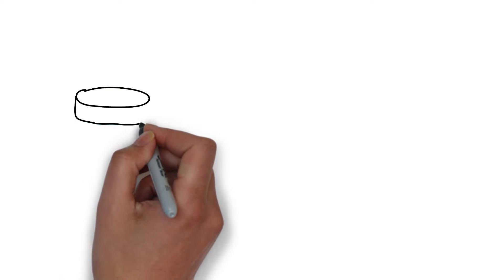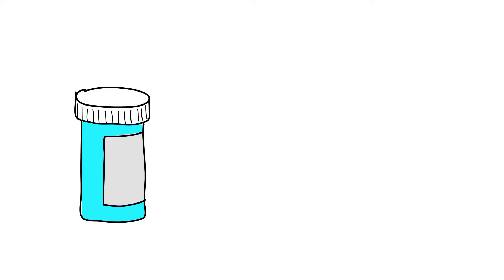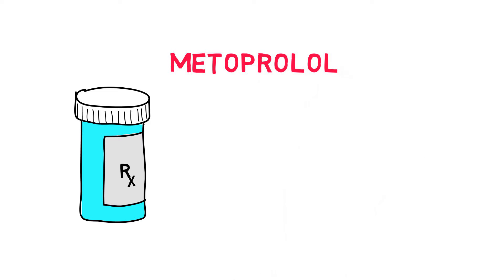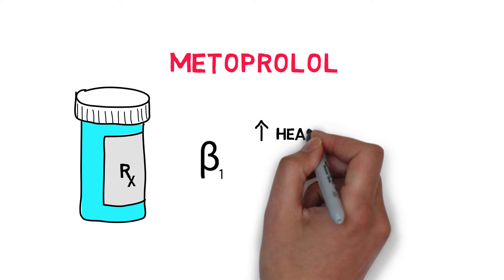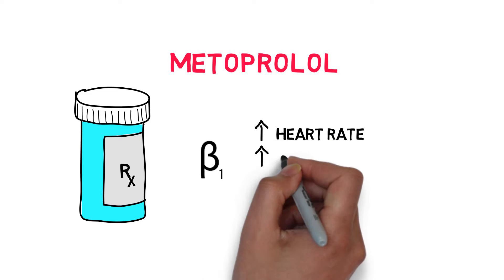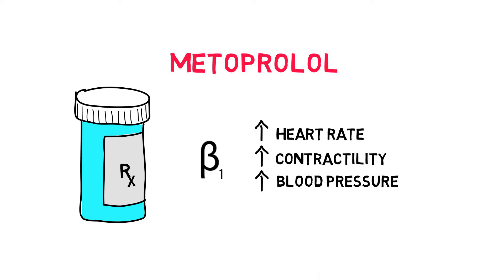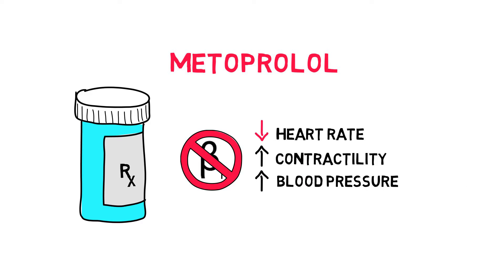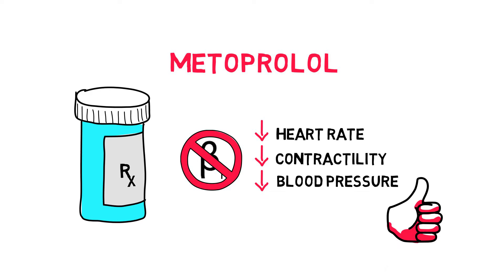When you prescribe a drug to your patient, you'd want that drug to have a certain clinical effect. Let's take a look at metoprolol, a selective beta-1 receptor blocker. Beta-1 receptors increase heart rate and heart contractility, and promote renin release, which leads to an increase in blood pressure. So blocking these would cause a decrease in heart rate, a decrease in contractility, and a decrease in blood pressure, making the heart a bit more energy efficient.